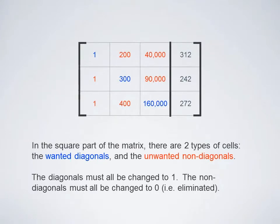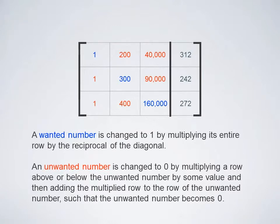Basically, there are two different types of numbers here. There's the ones you want and the ones you don't want. The ones you want are the diagonal numbers in blue, and you want to change all of those into ones. The numbers you don't want are in red, and you want to change those into zeros. The way that you change diagonal numbers into one is by multiplying their entire row by the reciprocal of the diagonal number. The way that you change the non-diagonal numbers into zeros is by multiplying another row by the negative of the number which you are trying to get rid of, and then adding that multiplied row to the row of the number which you are trying to get rid of.